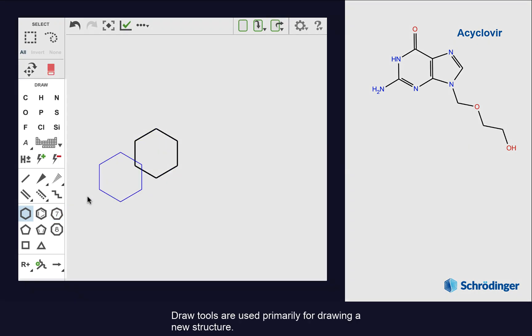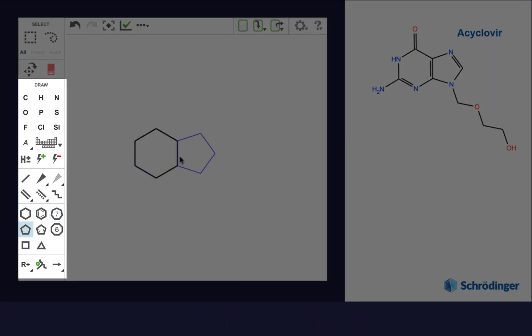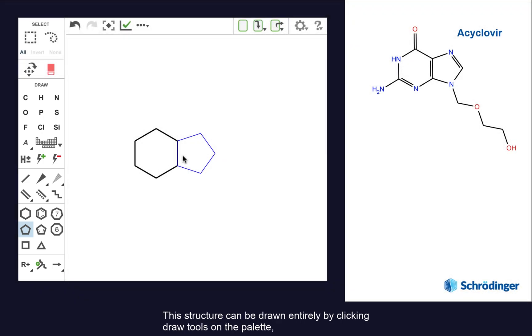Draw tools are used primarily for drawing a new structure. We're going to demonstrate this by drawing acyclovir. This structure can be drawn entirely by clicking draw tools on the palette, or more efficiently, by once again using keyboard shortcuts.